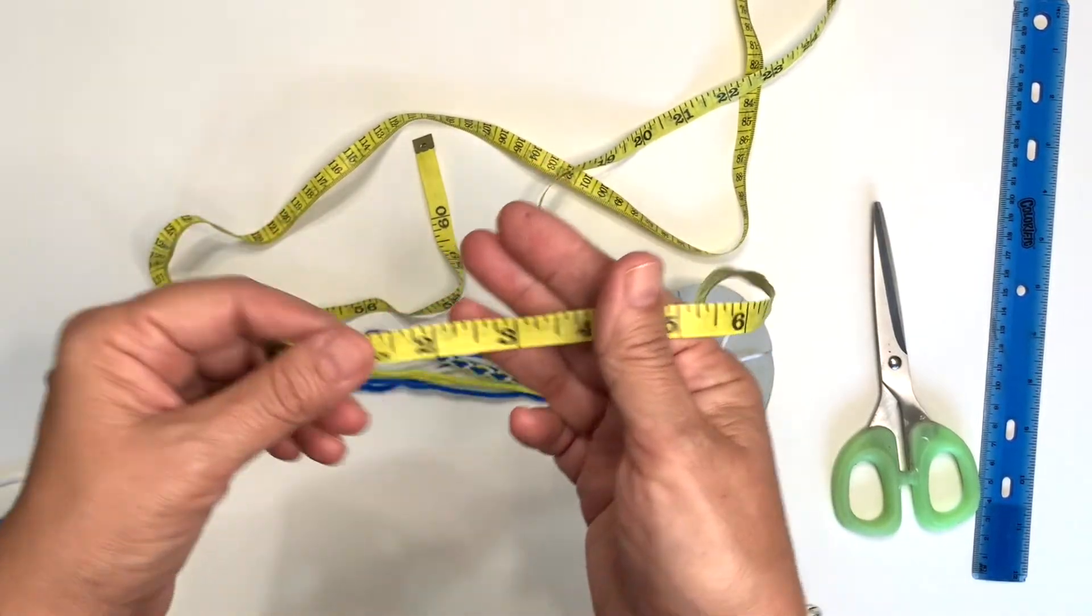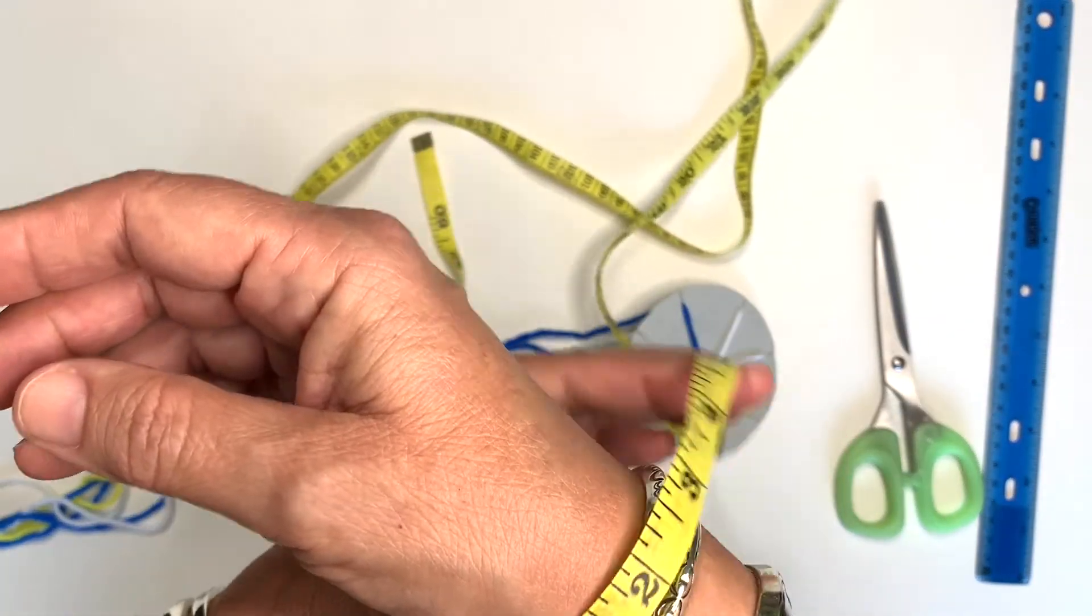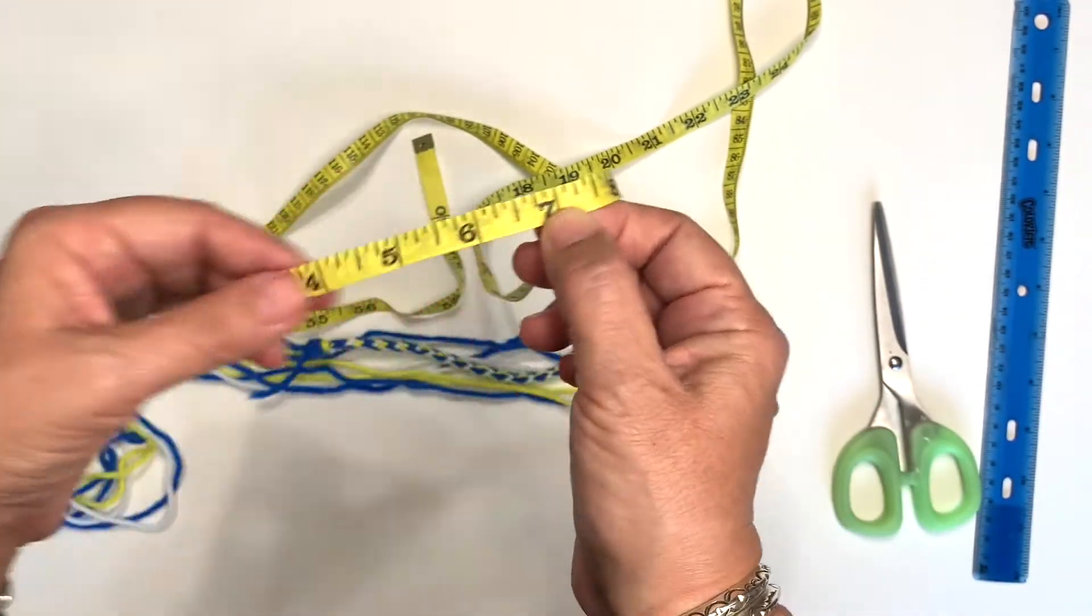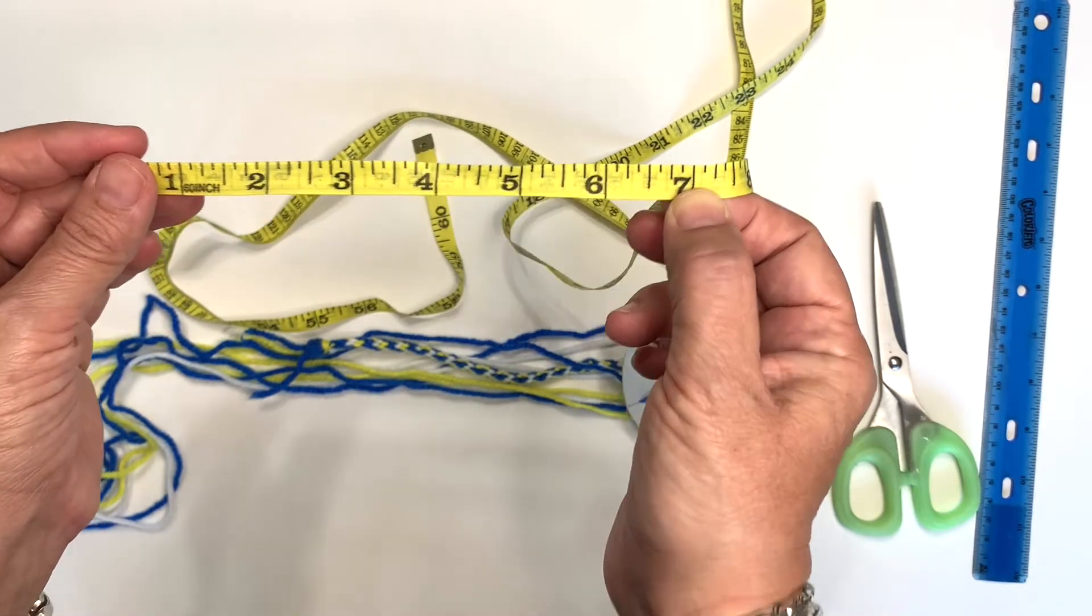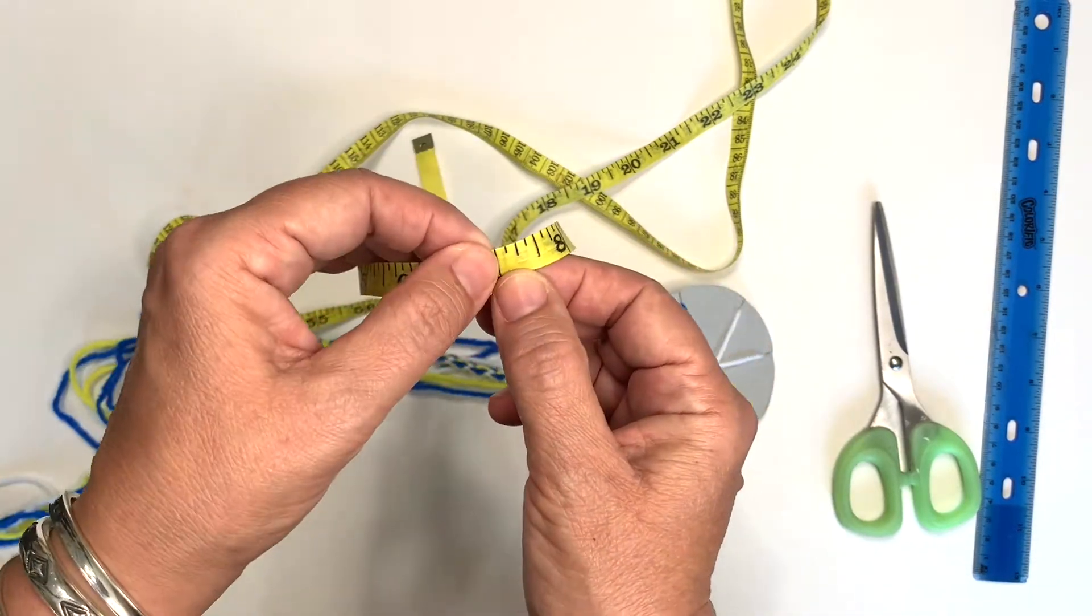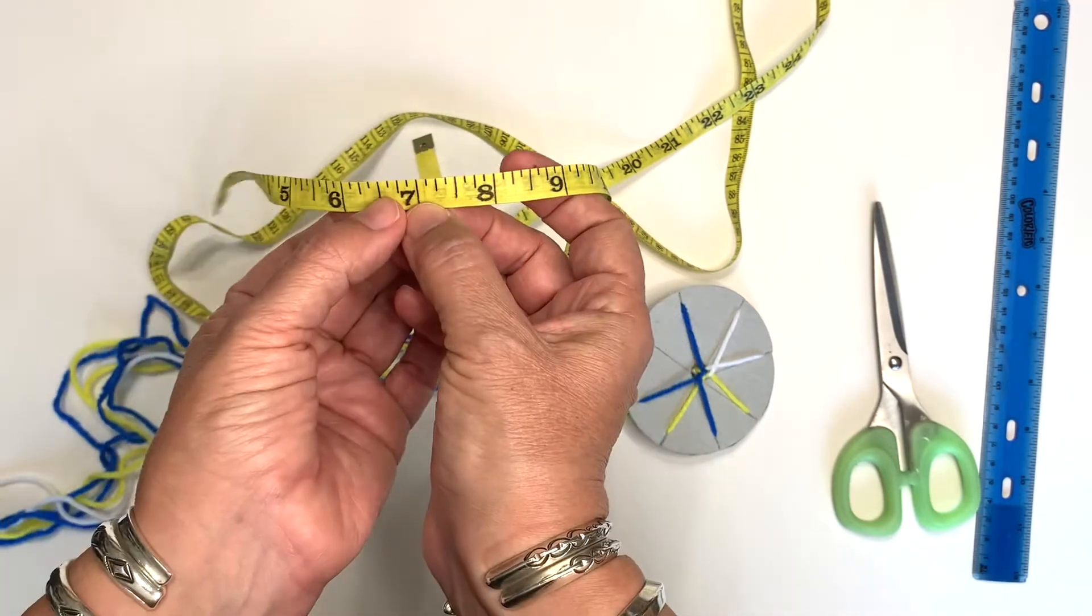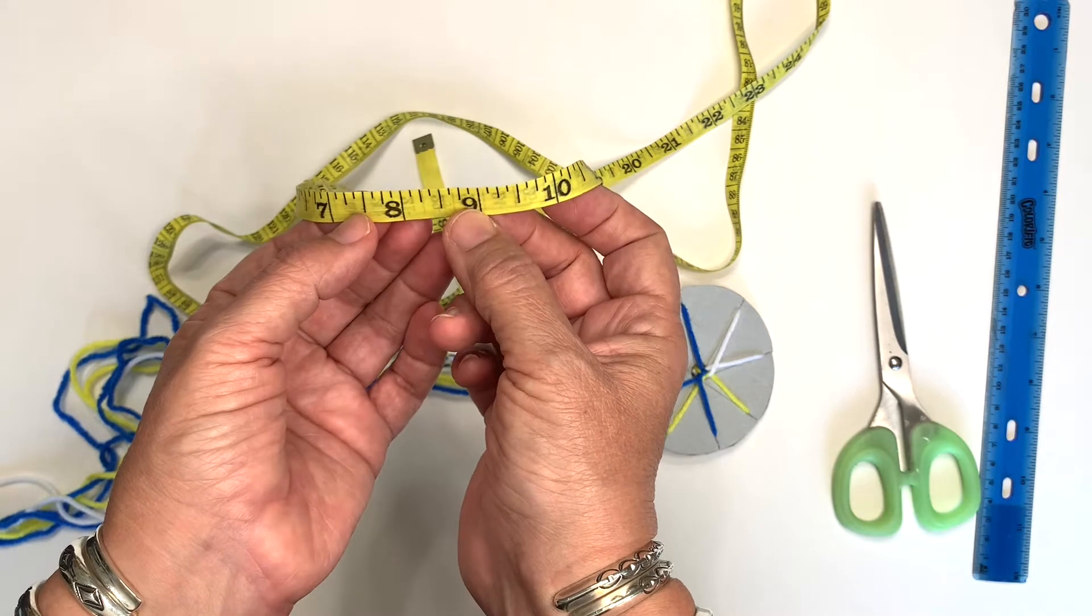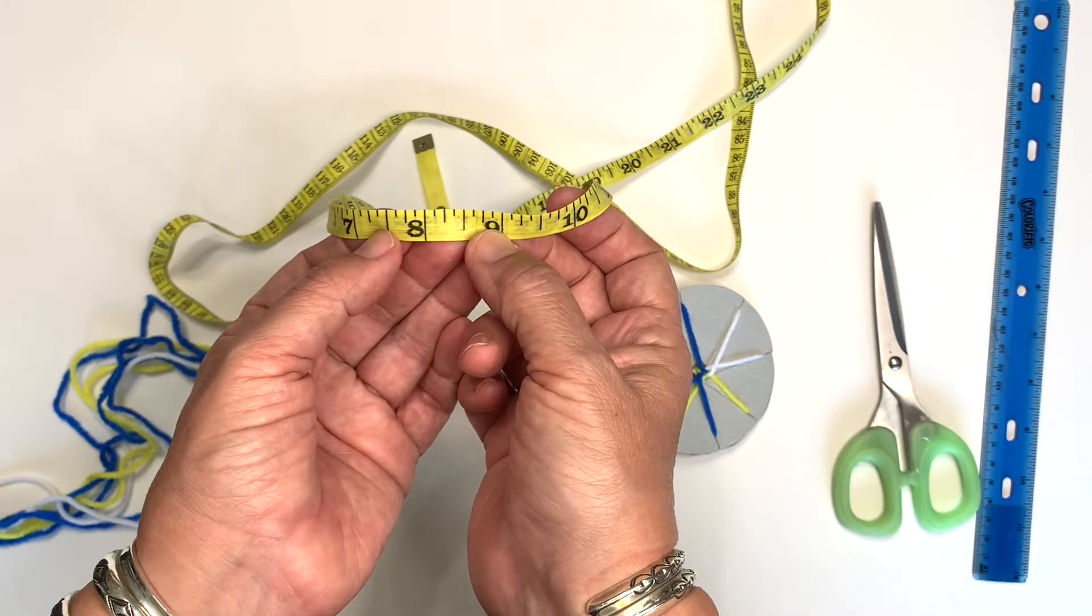First, we need to measure our wrist. I measured mine and it came out to about seven inches. Now we need to add two more inches so that it will easily slip over your hand. So there's seven, eight, nine. Nine inches is how long I need my kumihimo cord to be.